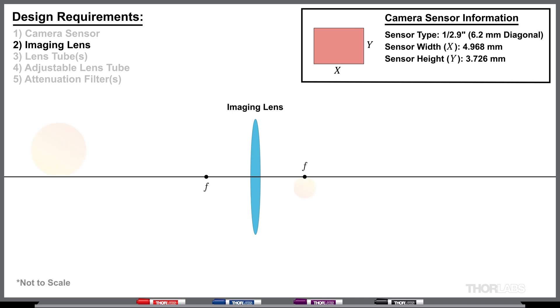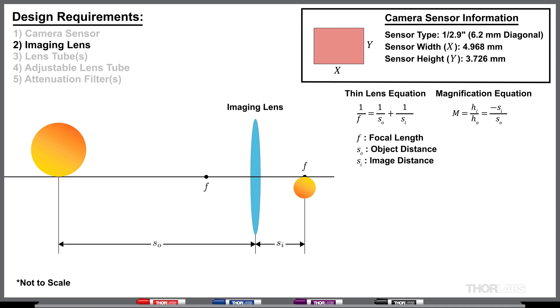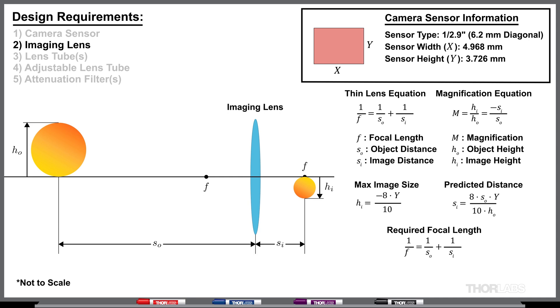Since we're imaging the whole visible spectrum, we'll select an achromatic doublet to minimize the wavelength-dependent focal shift. For choosing the focal length, there's going to be an upper limit, since too long a focal length will produce an image that is too large for our camera sensor. To decide, we'll use the thin lens equation and the magnification equation, which relate focal length, object and image distance, as well as object and image height. Our camera sensor is wider than it is tall, so the sensor height will be the limiting dimension for our image.